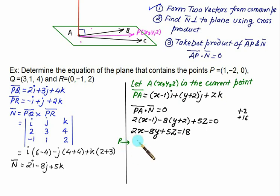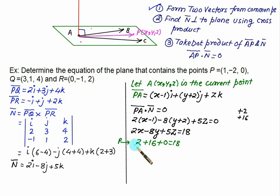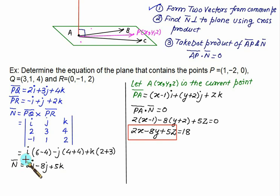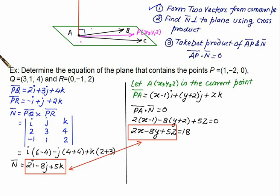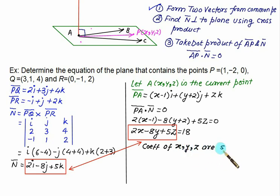Let's verify by substituting point P(1, −2, 0): 2(1) − 8(−2) + 5(0) = 2 + 16 = 18. Yes, it is satisfied, confirming the equation is correct. You can also check points Q or R. Notice that the coefficients of the equation of the plane match the coefficients of n̄: the X-coefficient corresponds to the i-component, Y to j, and Z to k. So from any plane equation, you can directly read off the normal vector n̄.